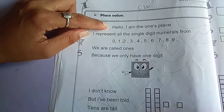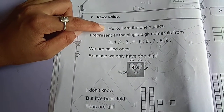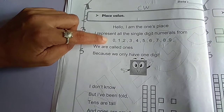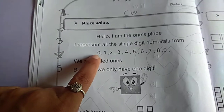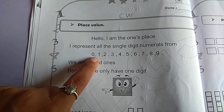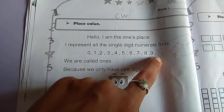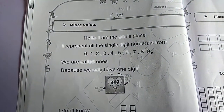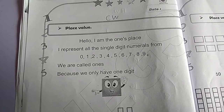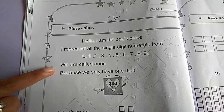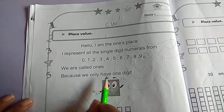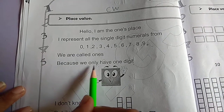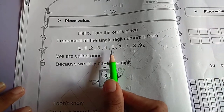यह देखो — मैं one की place हूँ। One की place में मैं क्या दिखाता हूँ? Zero से nine numbers को मैं represent करता हूँ। One place हमको समझाता है 0, 1, 2, 3, 4, 5, 6, 7, 8, and 9 — till 9 only, up to 9 digits. Those are called single digits. Those single digits we call ones place. We are called ones because we only have one digit. Understand?